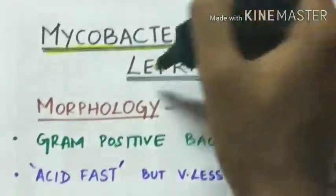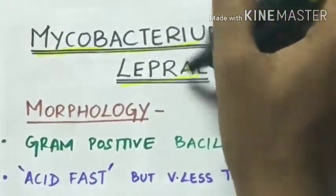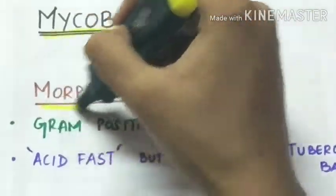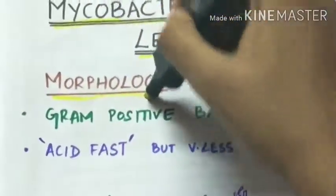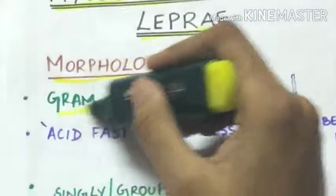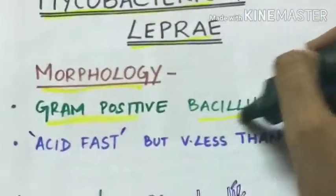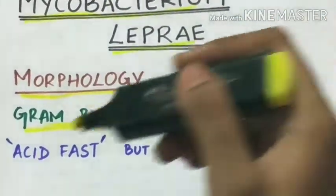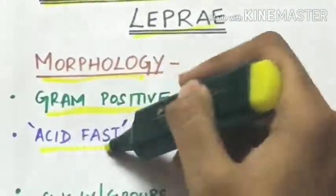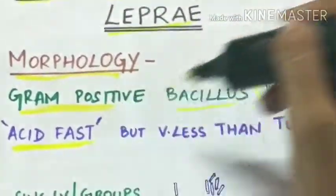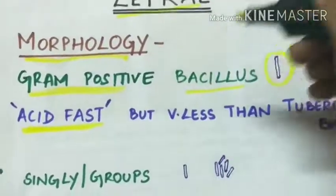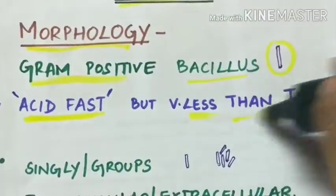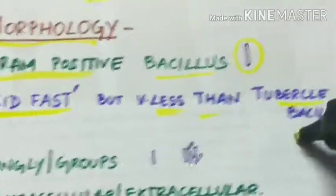Mycobacterium leprae — Morphology. They are gram positive bacilli. They are acid fast, but less so than tubercle bacillus.